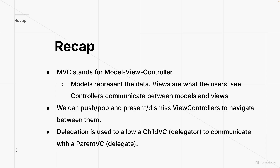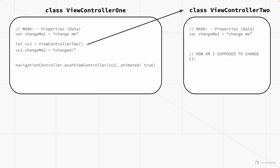Delegation is used to allow a child view controller to communicate with the parent. I wanted to do a quick recap of delegation. Imagine we have two view controllers — view controller one and view controller two. View controller one has a property called changeMe1, and view controller two has a property called changeMe2. We can change changeMe2 from view controller one, but how are we supposed to change changeMe1 from view controller two, since that class doesn't call this class?